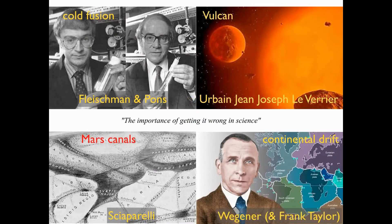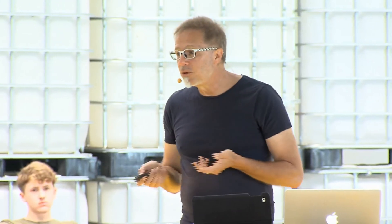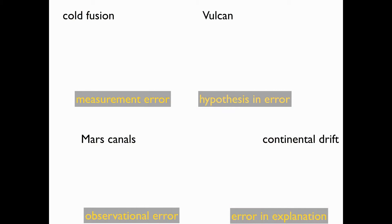I'd like to give a few examples of other errors, perhaps known or less well-known, in different areas. Cold fusion was discovered to great fanfare — chemists managing at room temperature to fuse atoms of hydrogen and generate energy. There's Vulcan, a planet predicted to exist very close to the Sun to explain why Mercury's orbit didn't behave according to Newtonian gravity. There are the Mars canals seen through telescopes, and the theory of continental drift by Wegener. Cold fusion was a measurement error; Vulcan was a hypothesis error; Mars canals are an observational error; and continental drift is an error in explanation — the model was correct, but the explanation he gave was wrong, and that led to him not being taken seriously.